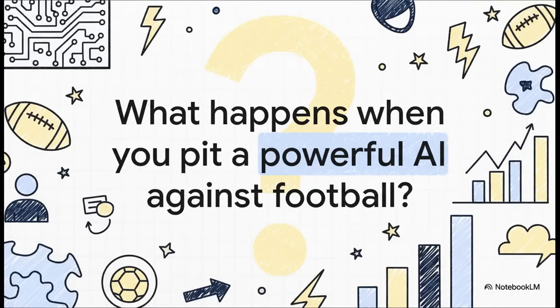We all say it. The beautiful game is beautiful because anything can happen, right? A deflection, a moment of individual brilliance, a dodgy VAR call. So what happens when you take all that human drama and you try to model it with pure data? Can an AI really find a pattern in all that madness? Well, that's exactly the question we're trying to answer today.